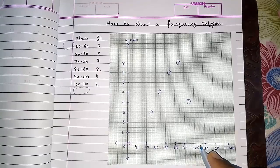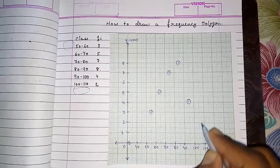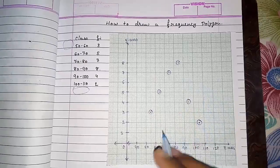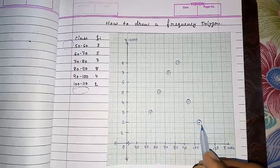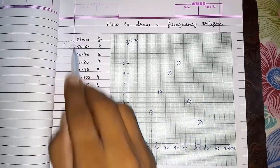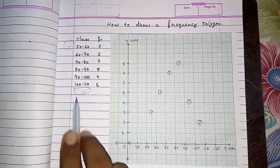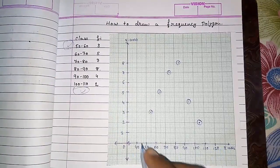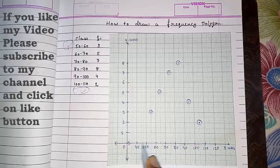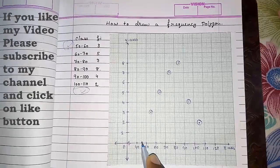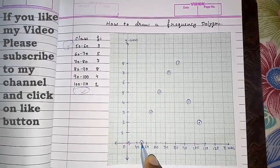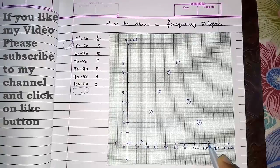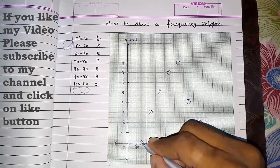And here from 100 to 110, 2 is there. Now we have to join this point, but we don't have a starting and ending point. So I told you in the beginning, we are taking two classes extra: in front also we are taking one class. Why? For the starting and ending point, we have to take the midpoint of 40 to 50 as the starting point and 110 to 120 as the ending point. Look, now we will start with here.